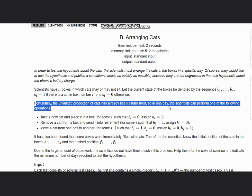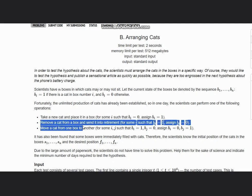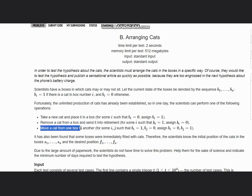So in one day, the scientists can perform one of the following operations: take a new cat and place it in a box for some i such that bi equals 0, assign bi equals 1; remove a cat from a box and send it to retirement for some i such that bi equals 1, assign bi equals 0; move a cat from one box to another for some i, j such that bi equals 1, bj equals 0, assign bi equals 0, bj equals 1.